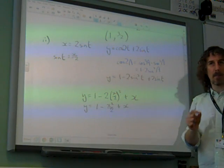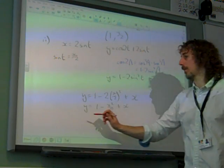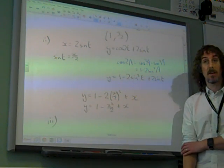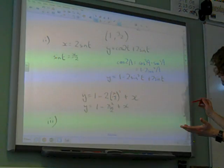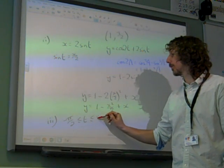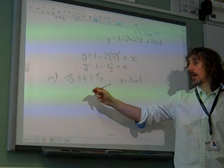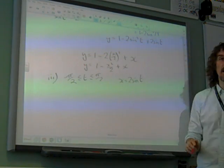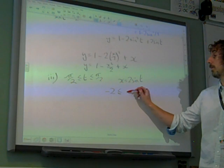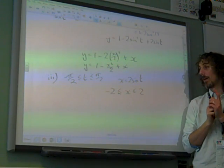Now, can you see the difference that makes for the last part of the question, which says state the set of values that x can take, and hence sketch the curve. So the set of values that x can take, well actually we should have got that, the question said t is between minus pi by 2 and pi by 2. So t goes from minus pi by 2 to pi by 2, the sine of t goes from minus 1 to plus 1, and x is twice that. So x goes from minus 2 up to plus 2. So there's one mark for writing minus 2 up to plus 2.